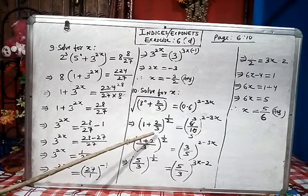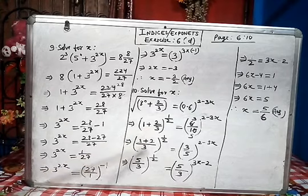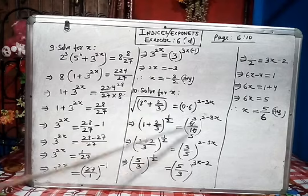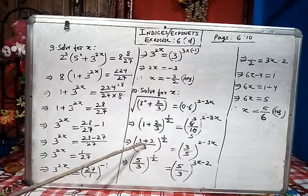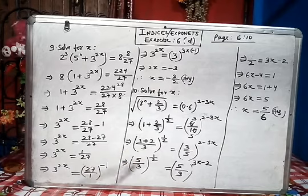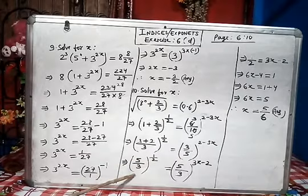Here I will do LCM because 1 plus 2/3, LCM is 3. 3 ones are 3 plus 2. (3+2)/3 to the power 1/2. 3/5 to the power 2-3x. 3 plus 2 is 5. (5/3)^(1/2). But here we have 3/5 and here our base is 5/3.